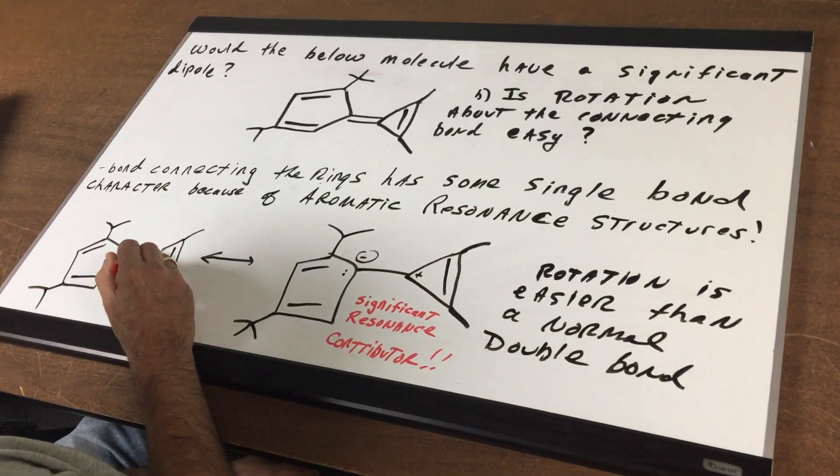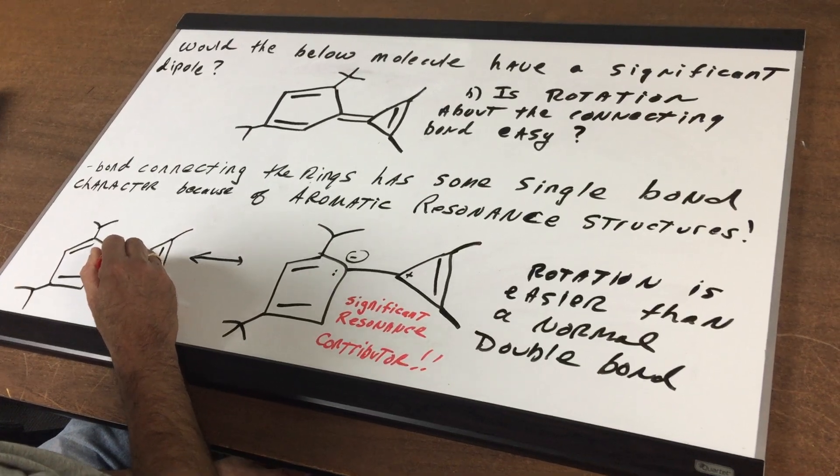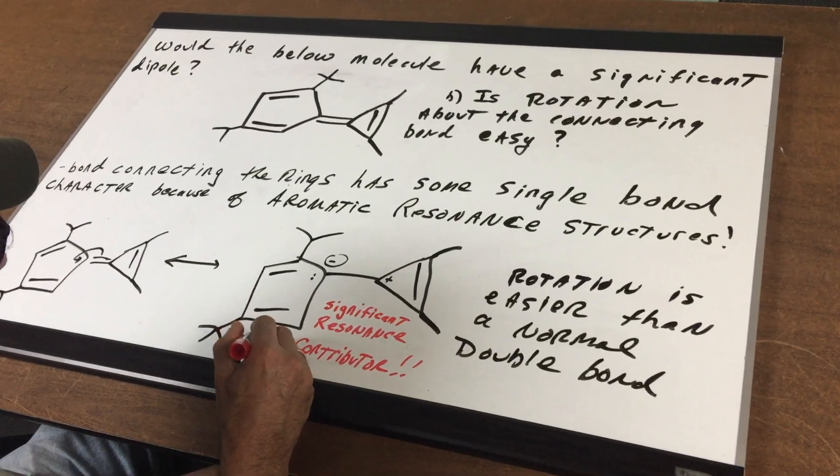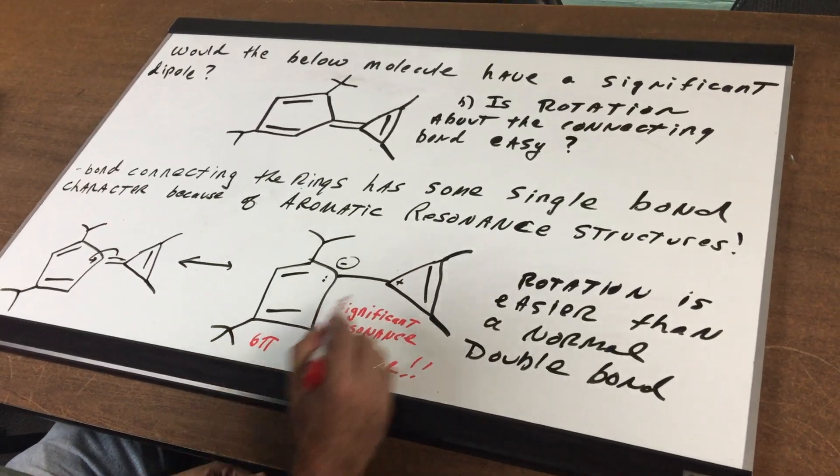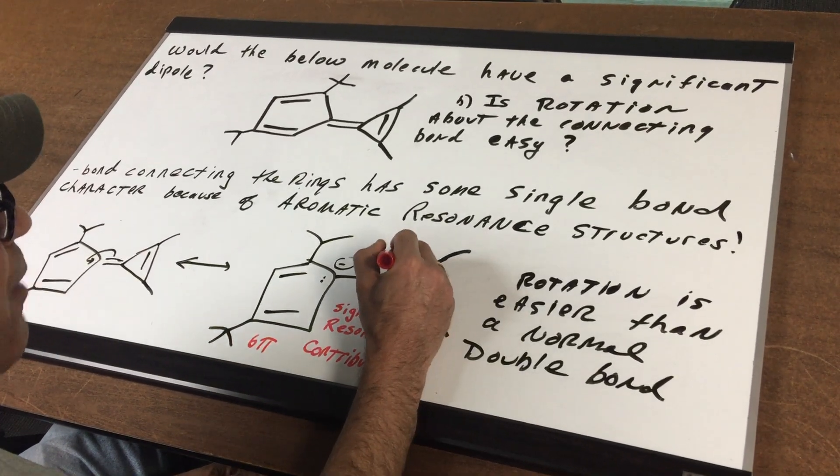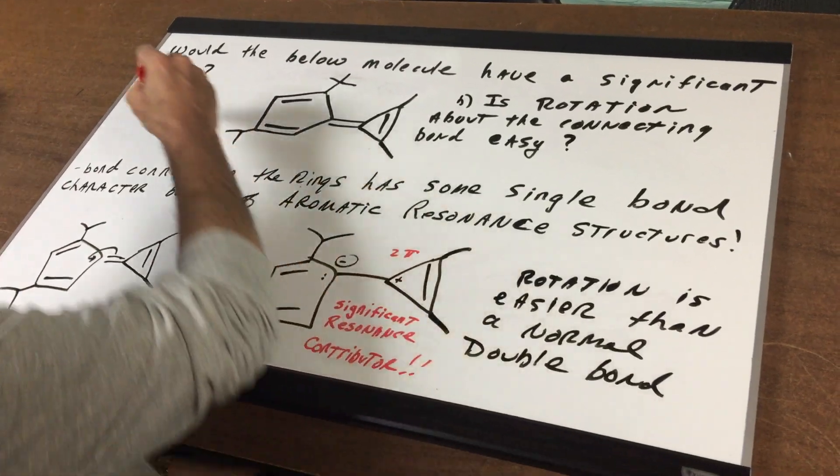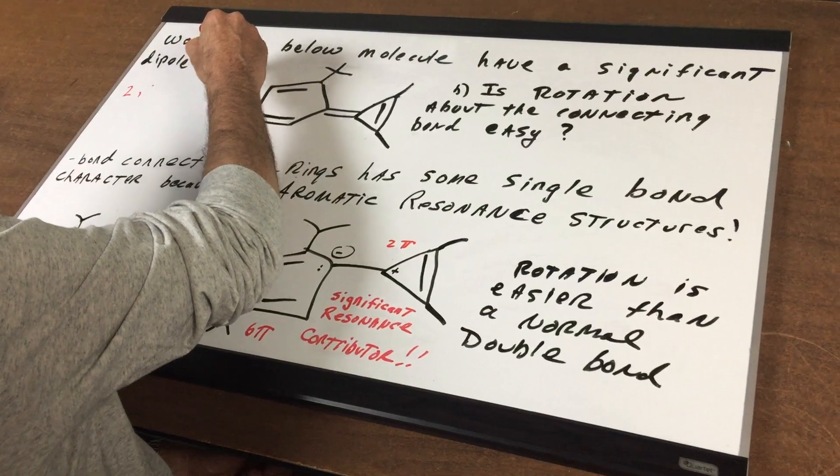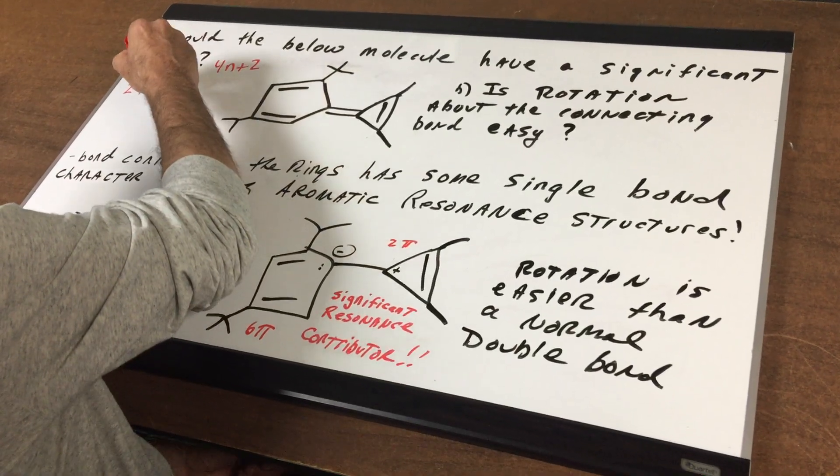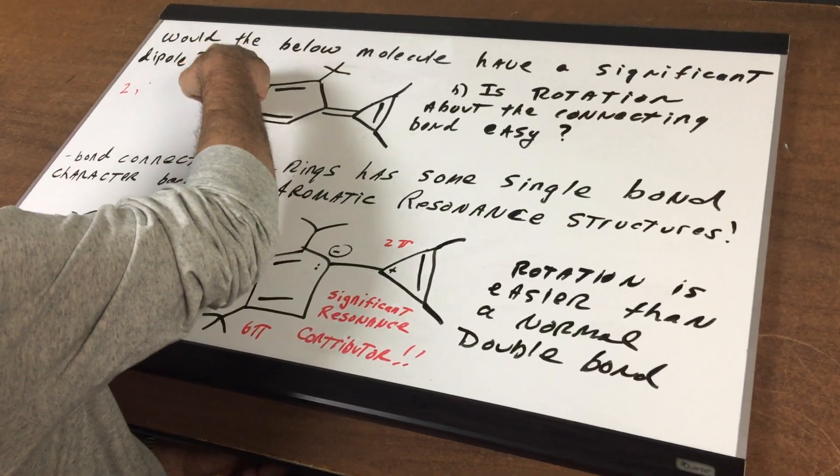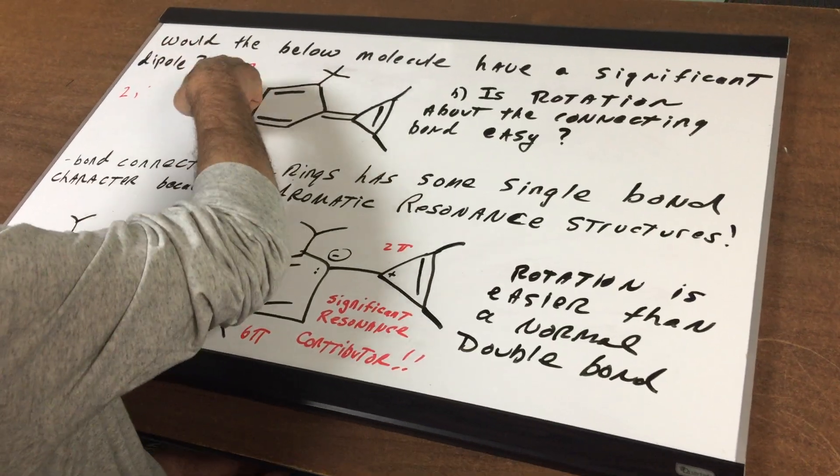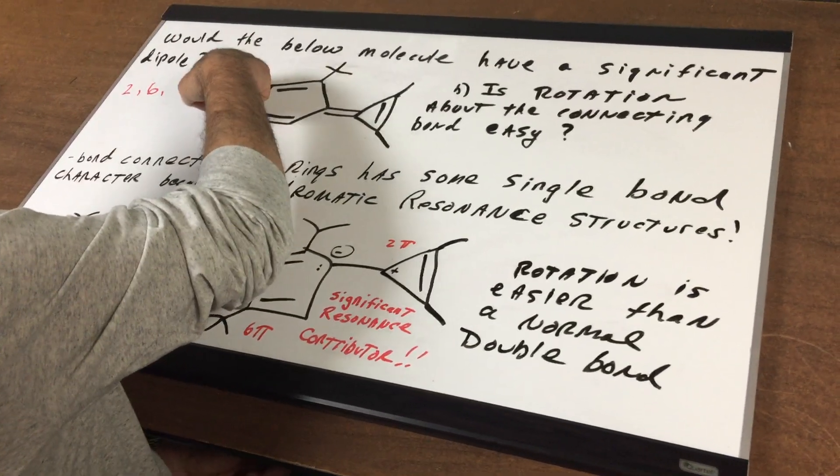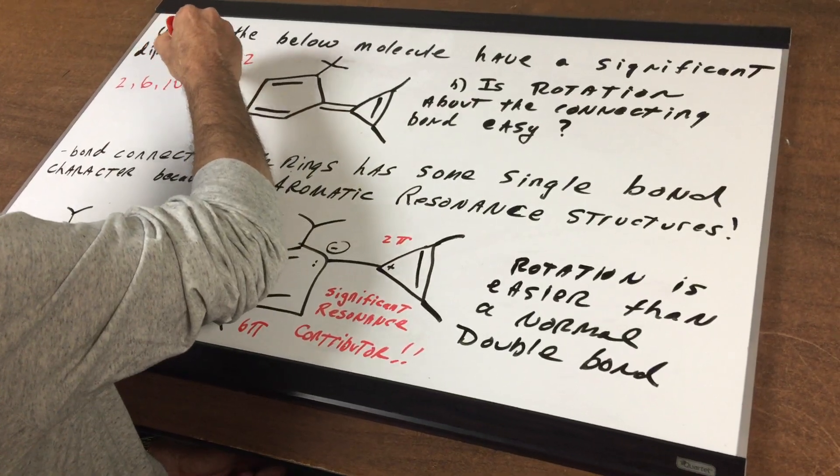If I was to move these electrons into this ring, you would see that this ring has 6 pi electrons and this ring has 2 pi electrons. Now you remember that I just said the Huckel numbers follow the 4n plus 2 rule. So if you put in a 0 for n you get 2. If you put in a 1 you would get 6. If you put in a 2 you get 10 and so forth.